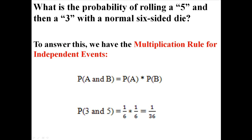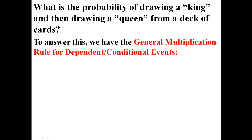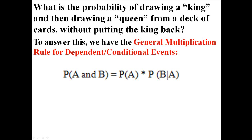That is the multiplication rule for independent events. Now, what is the probability of drawing a king and then drawing a queen from a deck of cards? Remember, these are dependent events. To answer this, we have the general multiplication rule for dependent or conditional events — conditional events are basically dependent events. The probability of both A and B occurring is the probability of A times the probability of B given that A has already occurred.